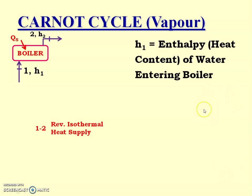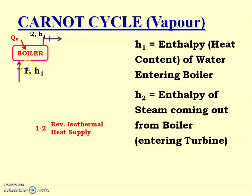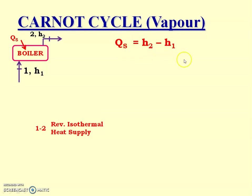Now let us find the enthalpy at every point, and the values of heat supplied QS, turbine work WT, heat rejected QR, and compressor work WC. H1 is the enthalpy of water entering the boiler, and H2 is the enthalpy of steam coming out from the boiler. H2 is higher, so heat supplied QS equals H2 minus H1. For the turbine, H2 is the enthalpy entering and H3 is the enthalpy of steam coming out. Work done by turbine WT equals H2 minus H3.